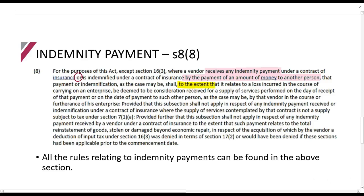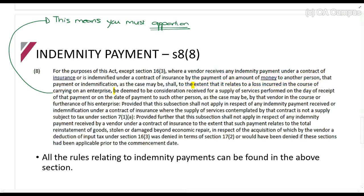To the extent that it relates to a loss incurred in the course of carrying on an enterprise - I'm going to make a comment here for now. I'll explain in a second. This means you must apportion. I'll explain it in a second. For now, I just want you to focus on the further. So for the purposes of this Act, where a vendor receives an indemnity payment or is indemnified under a contract of insurance by the payment of an amount of money to another person, that payment or indemnification, as the case may be, shall, to the extent that it relates to a loss incurred in the carrying on of an enterprise,